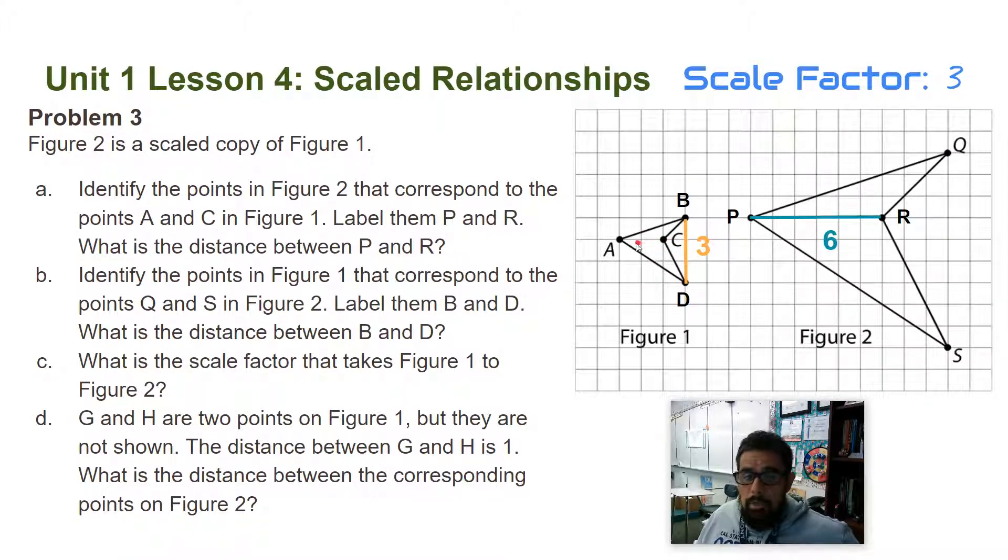So we're going to use points that we can count for sure. So I can do AC. Okay, AC here in the original one is two. The corresponding part in the copy is PR, which is six. So I have two to get to six, the scale factor is three. I'm going to multiply by three.